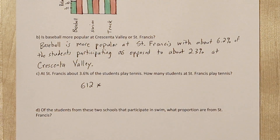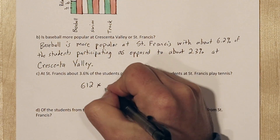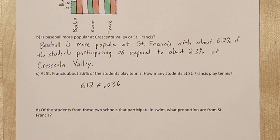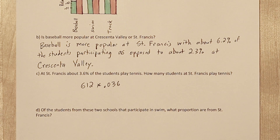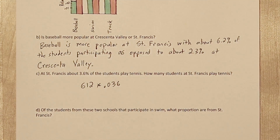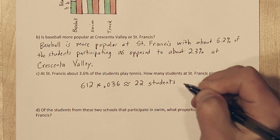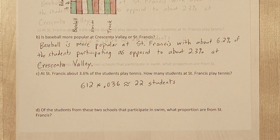To figure out how many students play tennis at St. Francis, we need to take the total number of students, 612, and multiply it by 3.6%. Now we didn't get an integer, and that's because they probably rounded the 3.6%. So let's just go with 22 — that's the most likely number of students who play tennis at St. Francis.